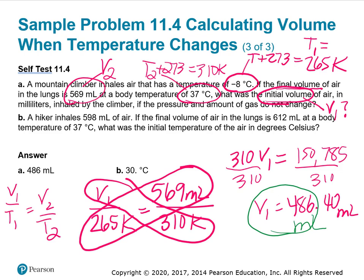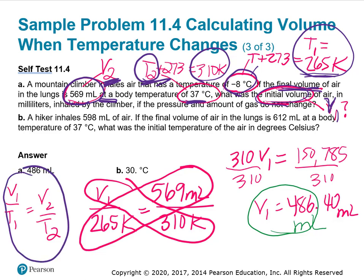Pause the video here to go over these questions. A mountain climber inhales air that has a temperature of negative 8 degrees Celsius. I took that temperature and made it into Kelvin. If the final volume of air in the lungs is 569 milliliters, so that's V2, at a body temperature of 37, so T2 is 310. What was the initial volume, V1, of air, assuming that temperature, 265 Kelvin, was our T1?